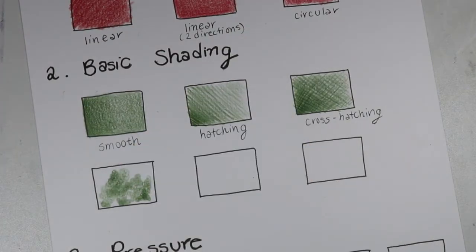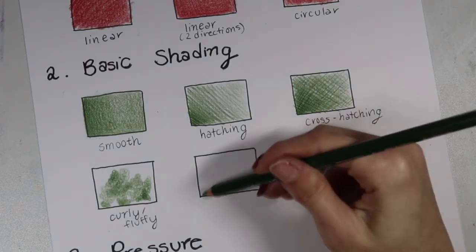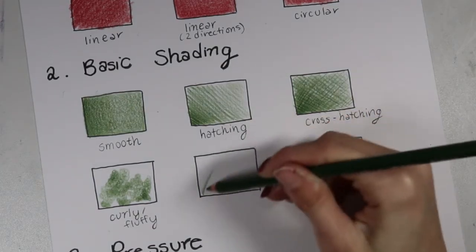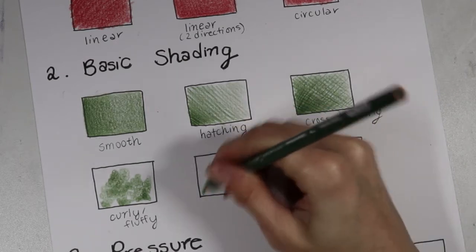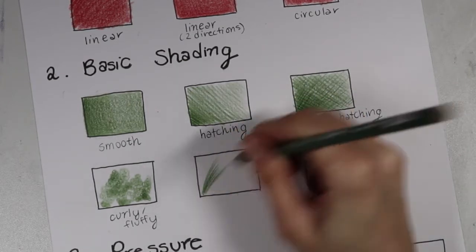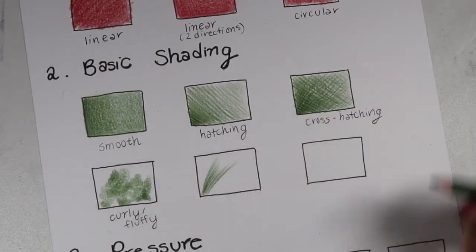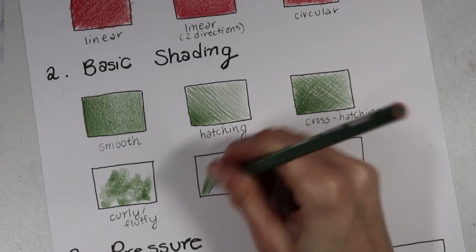I'm not going to color the whole box, but you can see what that looks like. If you're coloring something like hair, use kind of like a stroking motion like this, where you kind of just flick the pencil on top of the paper. This also works for maybe landscape where you need to draw some grass.